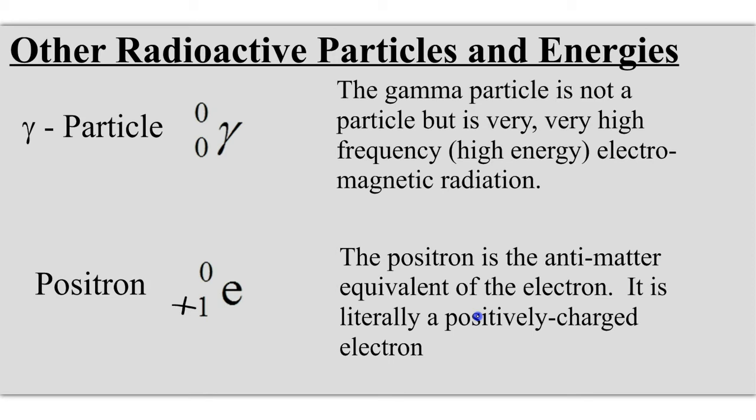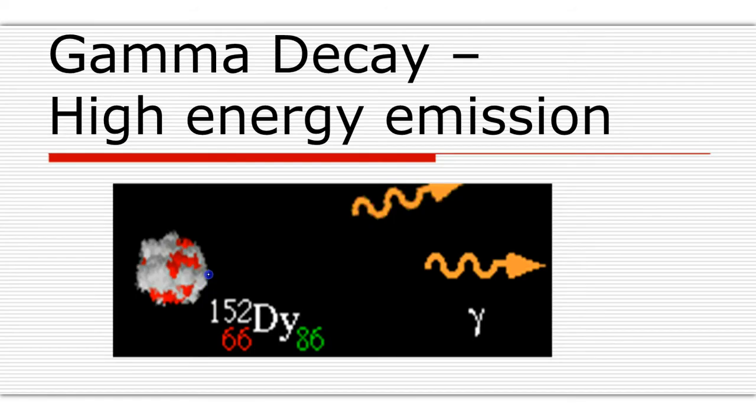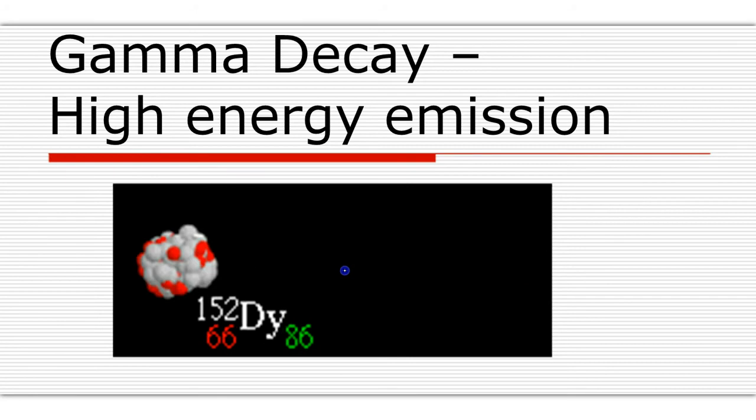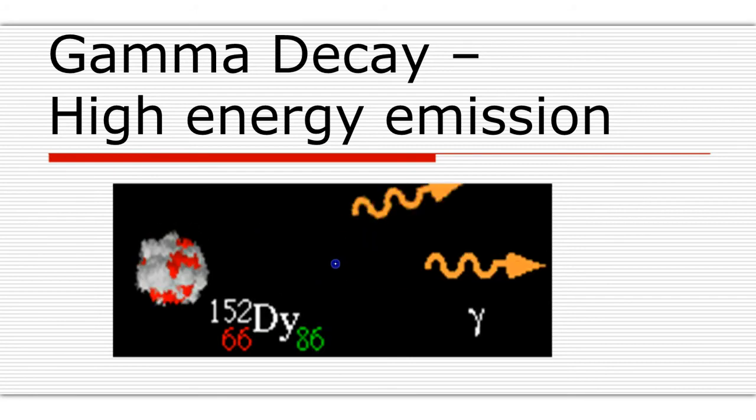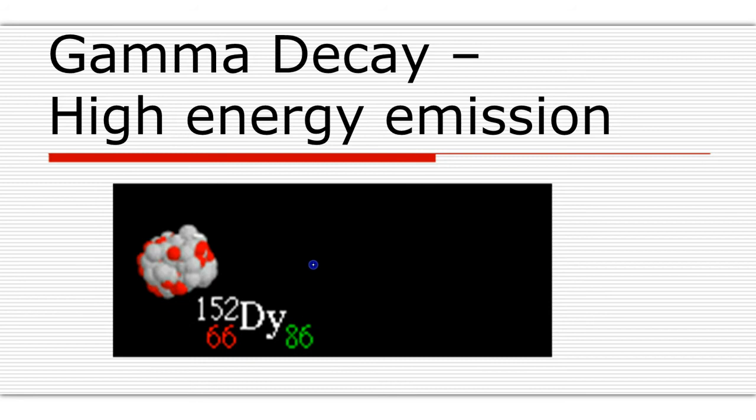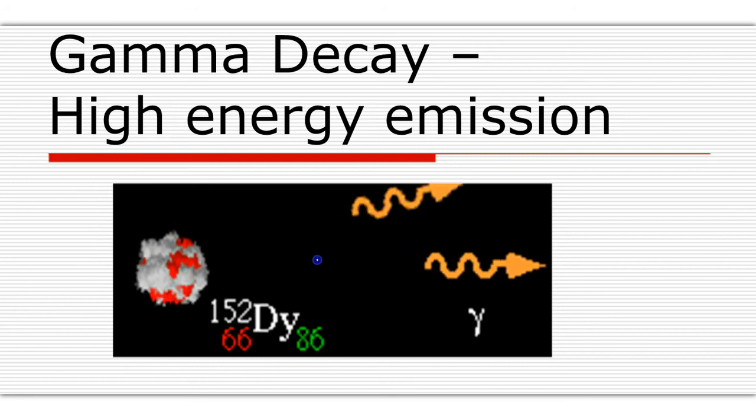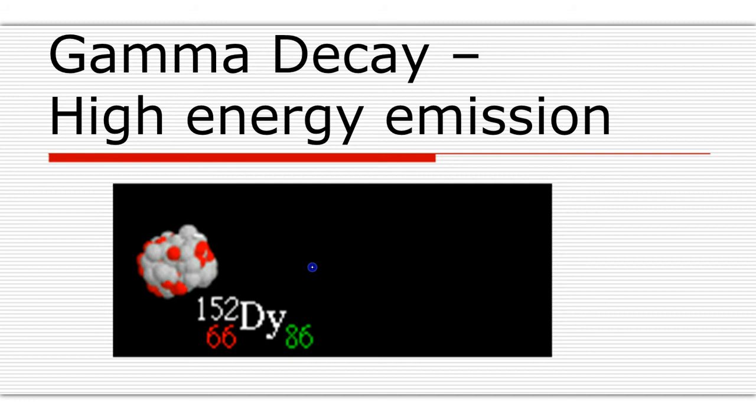Other radioactive particles and energies include the gamma radiation, or gamma particle. Notice gamma has 0 mass and a 0 for atomic number. And then another particle, which happens to be a particle of antimatter, would be the positive electron, or positron, which has a mass of 0 and a charge of plus 1. Gamma decay is simply high energy emissions that are emitted, and it can happen during both the processes of alpha decay and beta decay. So gamma decay can accompany the other types of radioactive decay simultaneously. You can actually technically have all three occurring at the same time as well.